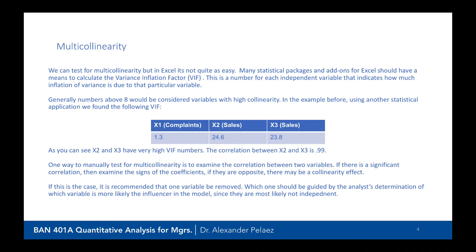But here's an example output. In the example before, we would have found this VIF for complaints as being 1.3, for sales as being 24.6, and for the other sales variable, 23.8. As you can see, X2 and X3 have very high VIF numbers. And if we actually calculated the correlation between X2 and X3, we would see that it would be 0.99.